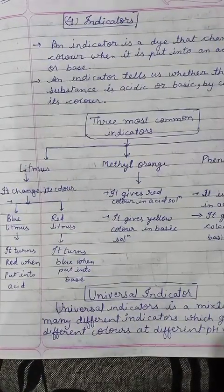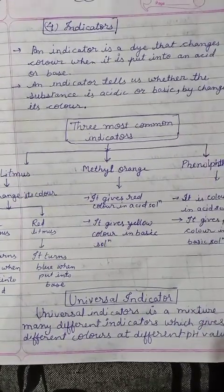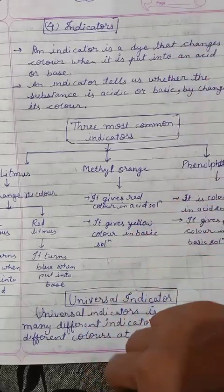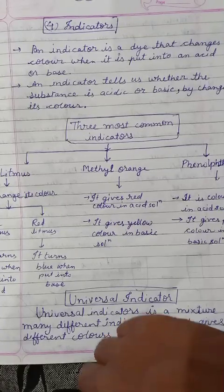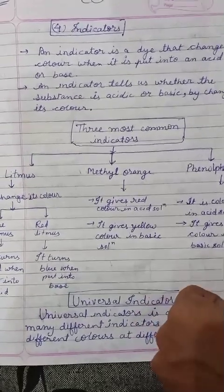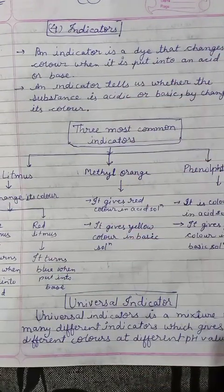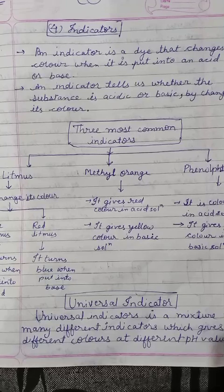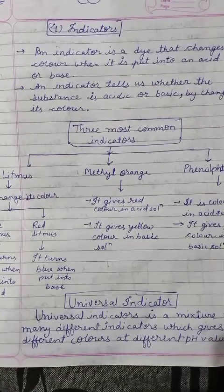Hello students, last time we studied about pH and now we are going to study about indicators. An indicator is a dye that changes color when it is put into acid or base. The color of that dye will change when it is put into acidic or basic solution. An indicator tells us whether the substance is acidic or basic by changing its color.